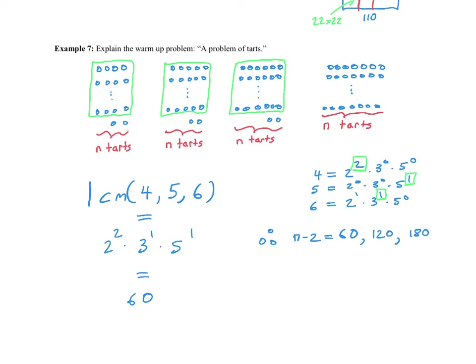It can't be larger than 180 because we started with only 16 dozen (192) tarts. So n itself is either 62, 122, or 182. The last condition is that n must be a multiple of 7. Checking: 62 is not, 122 is not, but 182 is. So there are 182 tarts in the display. We started with 192, so 10 tarts were sold.